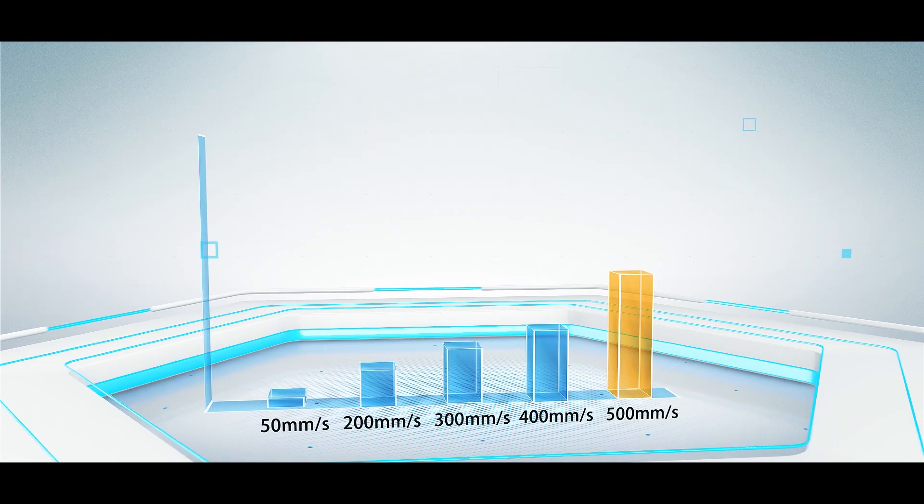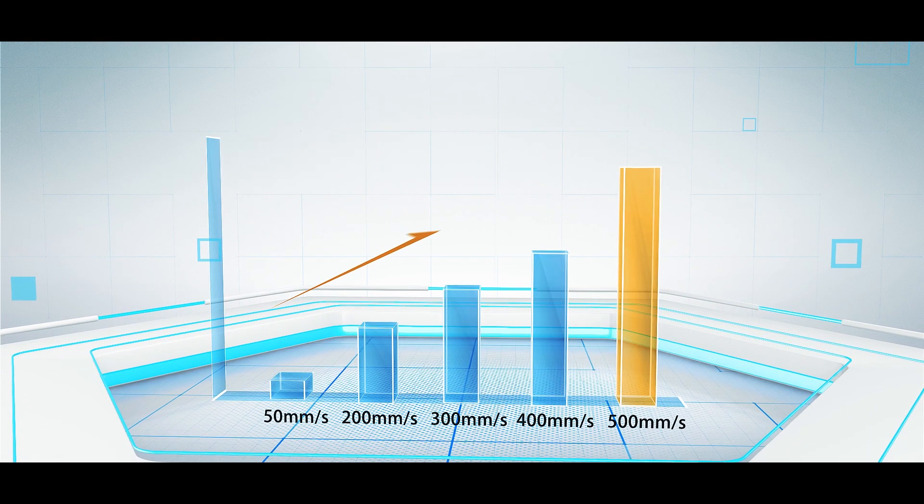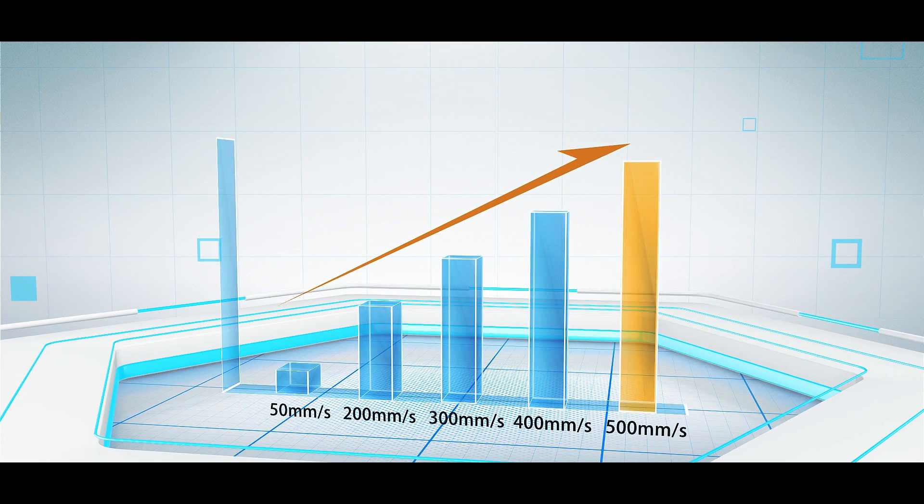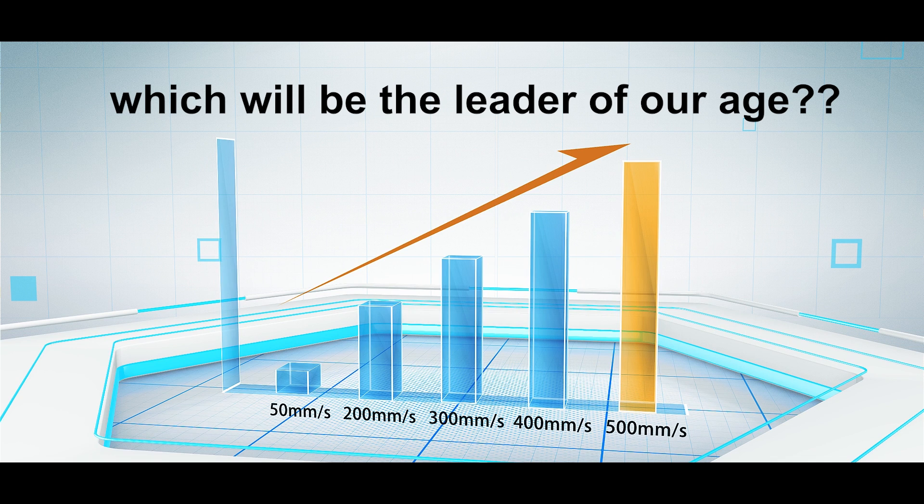The speed of printers on the market ranges from 50 millimeters per second to 500 millimeters per second. FDM printers have also entered the age of high-speed development. So which will be the leader of our age? That is the question.